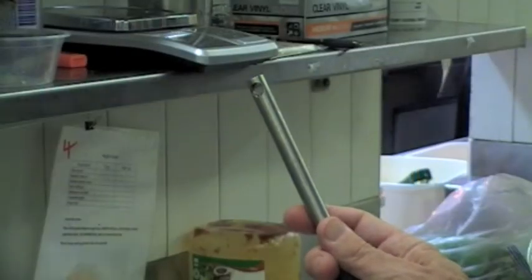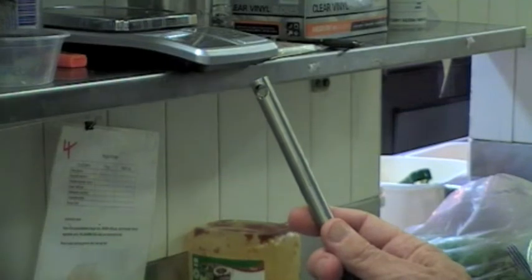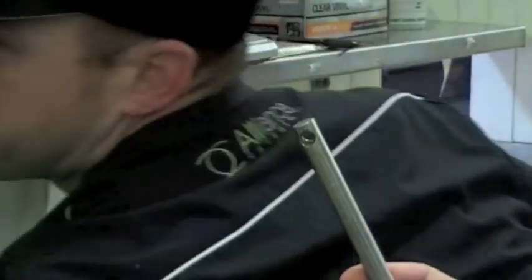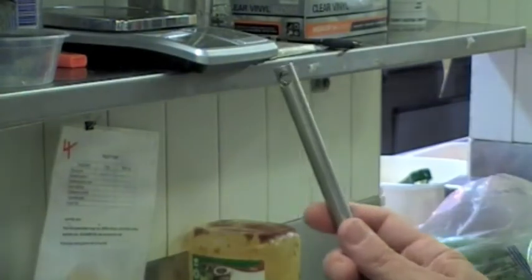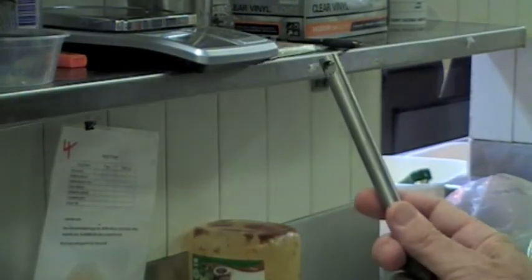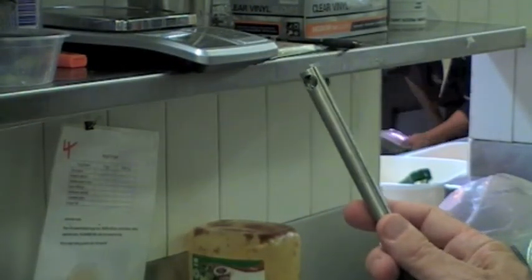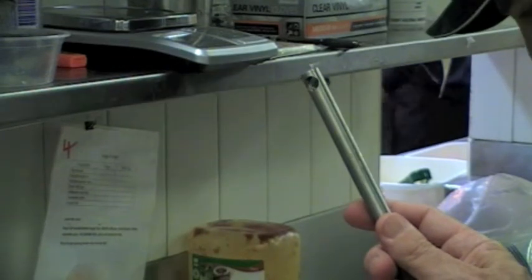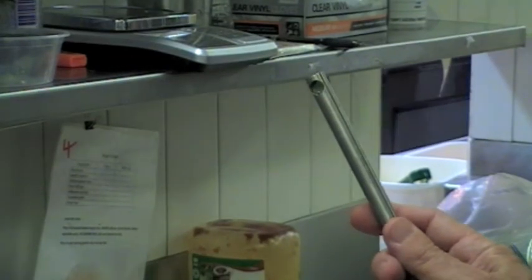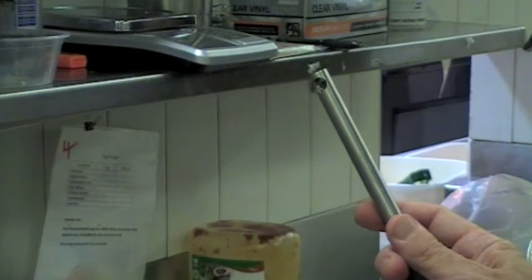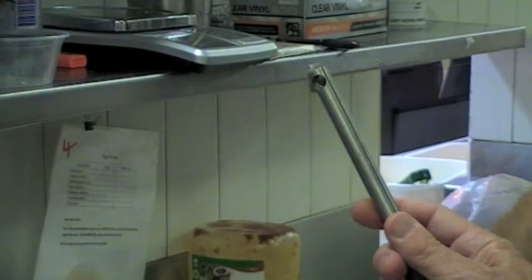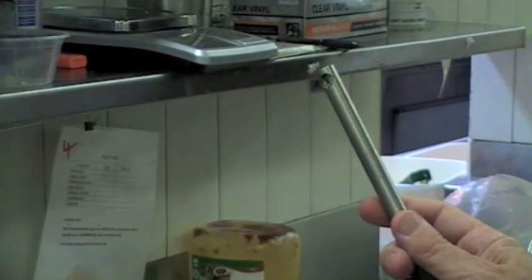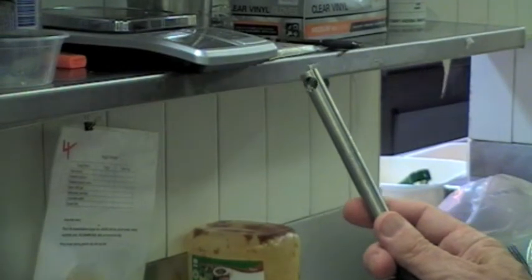This is an anemometer which is capable of measuring fairly low airflow rates. And what we're doing at the moment in the kitchen area is measuring the airflow rate in the area where the worker is assembling the burgers.